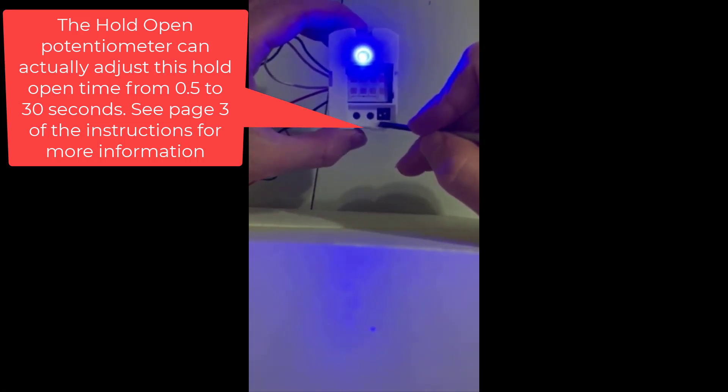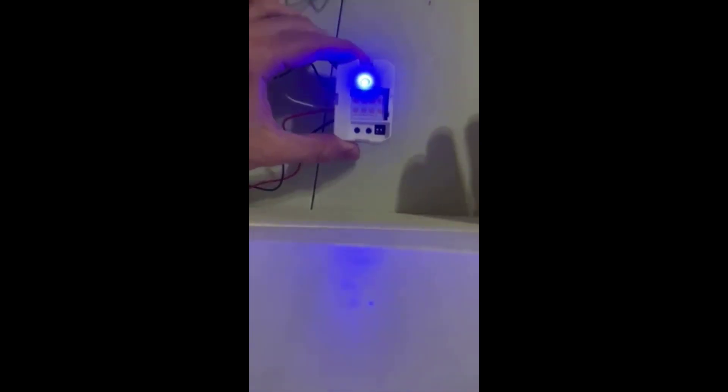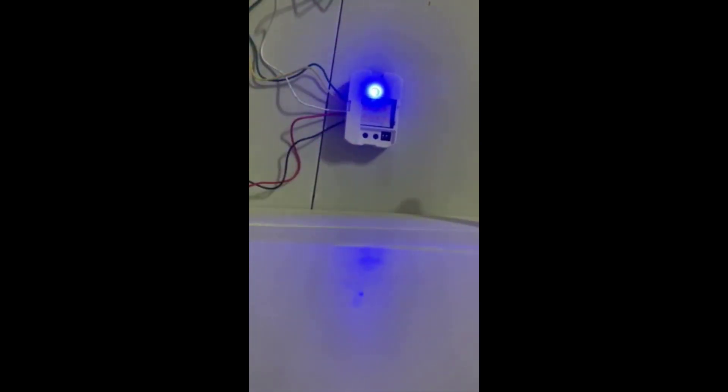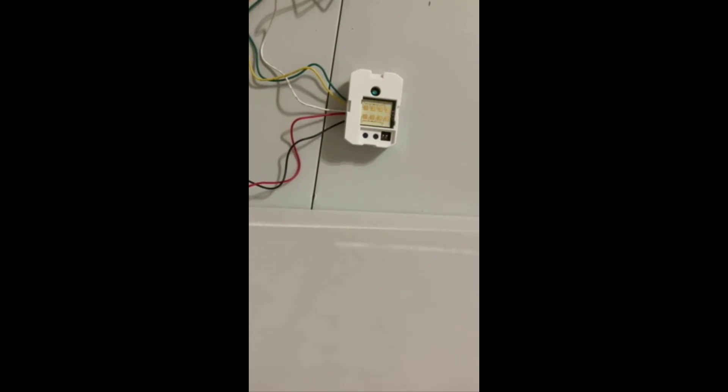If you have this dip switch changed though from the factory default of down and you have it set up, now that's going to make it behave differently because now we're in toggle mode. So toggle mode acts like a light switch. When you wave your hand in front of that sensor the first time, it's like flipping a light switch up and it's just going to constantly hold that signal to the operator which in turn will constantly hold that door open.